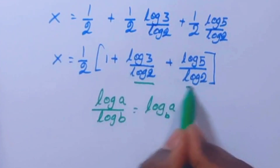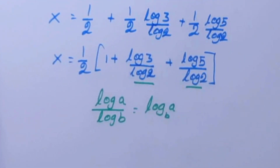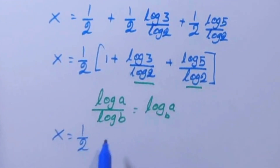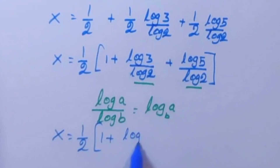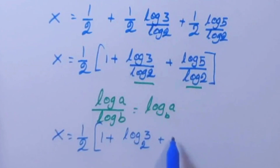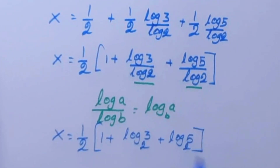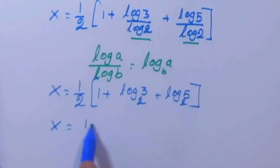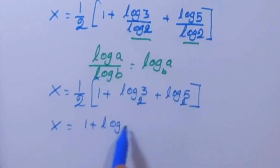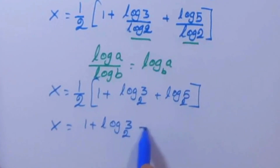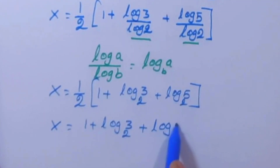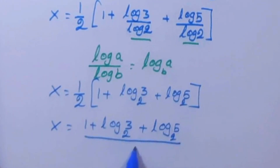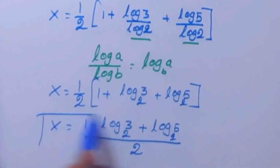Applying the change-of-base formula, x equal to 1 by 2 times open bracket 1 plus log 3 base 2 plus log 5 base 2 close bracket. This is our final expression for x.